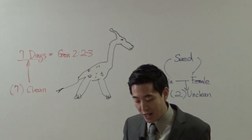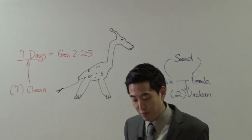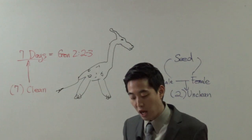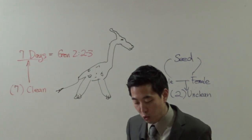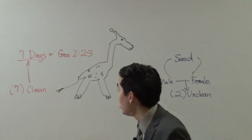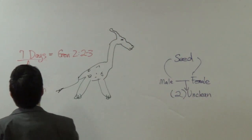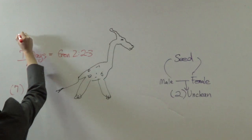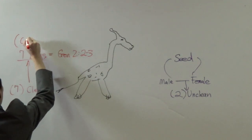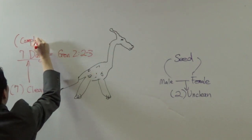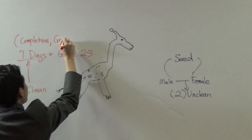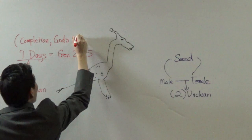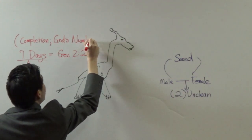And God blessed the seventh day and sanctified it. See, it's something holy. It's something special. Because that in it he had rested from all his work which God created and made. So seven is the number, is representing God's number, or completion. It's God's number.